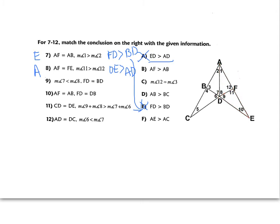For example nine: the measure of angle 7 is less than angle 8. I know FD equals BD, and AD is congruent to itself by the reflexive property, so I'm looking at triangles ABD and AFD. If angle 7 is smaller, the side across from angle 7 — which is AB — is smaller than the side across from angle 8, which is AF. So AB is less than AF, or equivalently AF is bigger than AB. So nine goes with statement B.